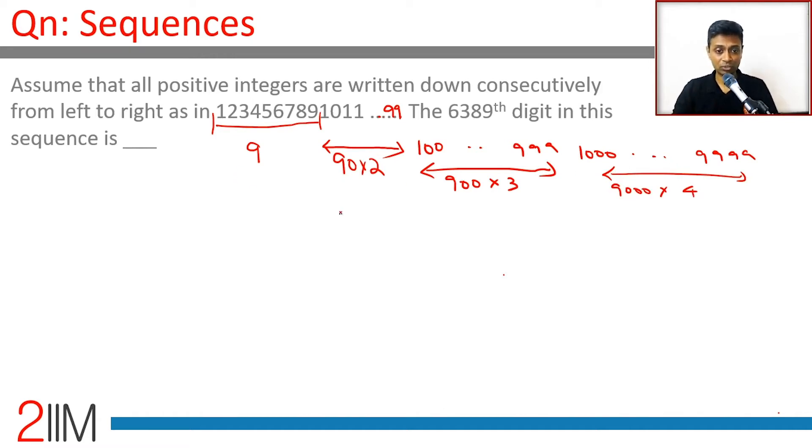Obviously this is 9. This is 180. This is 2700. This is 36,000.